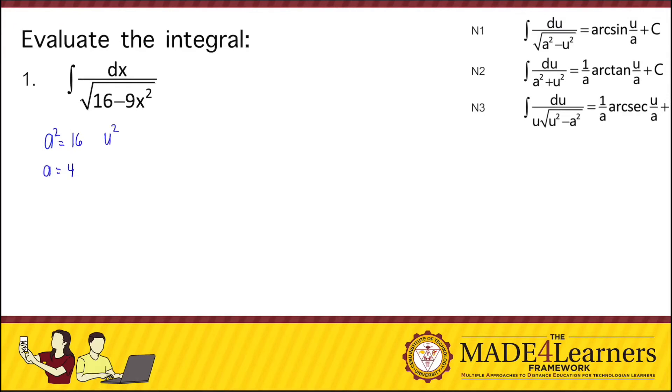And u squared is equal to 9x squared. Extracting the square root, we get u equals 3x. And then finding the differential, that's 3dx.